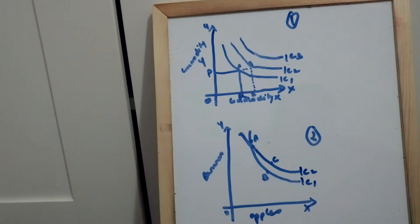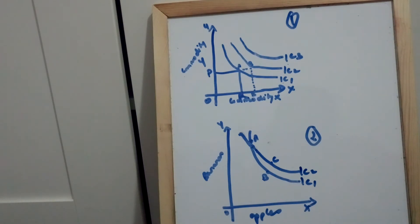MRS indicates the slope of the indifference curve. The second property is that indifference curves slope downwards, because as a consumer consumes more of one good, he must consume less of the other good. If the consumer wants more units of one good, say apples, he will have to reduce the number of units of bananas, so that total satisfaction remains the same.